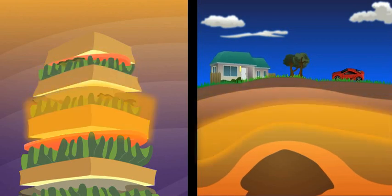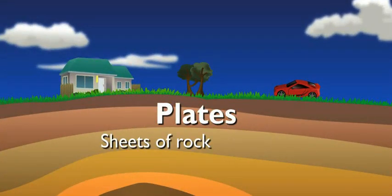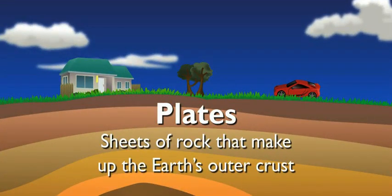All those layers of meat do sort of look like the earth's layers. They really do. Like the top slice of bread. It's like the earth's plates. The plates are the sheets of rock that make up the earth's top, outer crust.